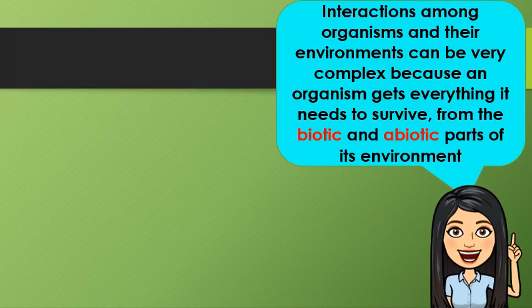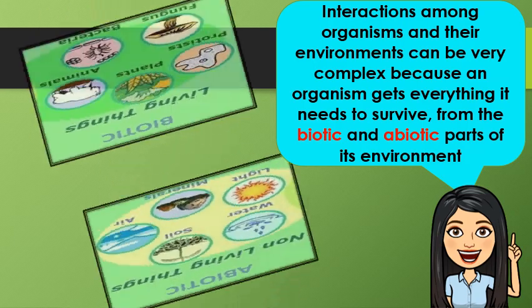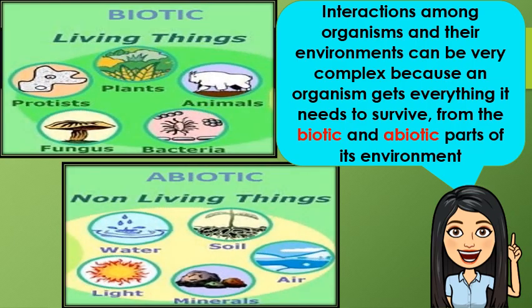Interactions among organisms and their environments can be very complex because an organism gets everything it needs to survive from the biotic and abiotic parts of its environment. Let's define these two: what do we mean by biotic, and what is abiotic?